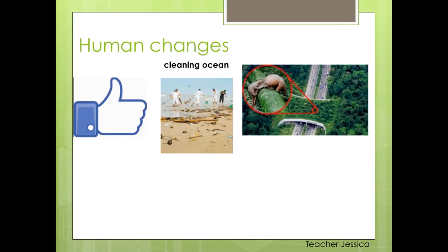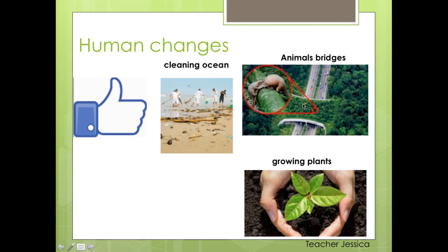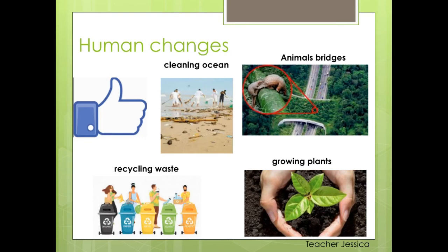Sometimes they build bridges for animals so they can cross without the risk of getting hit by a car. Another good human change: growing plants. Humans can start planting trees all over again. And recycling, guys — it is an amazing way to try to make things better.